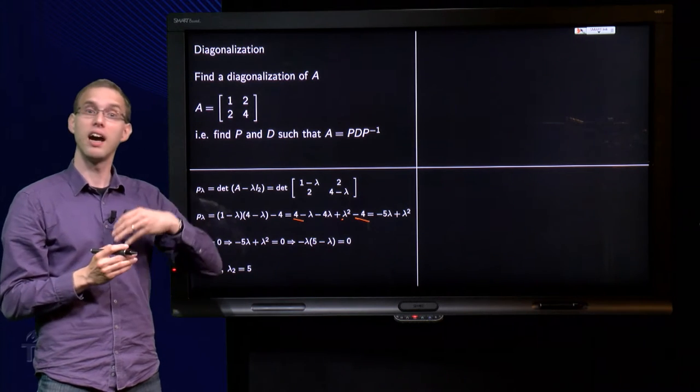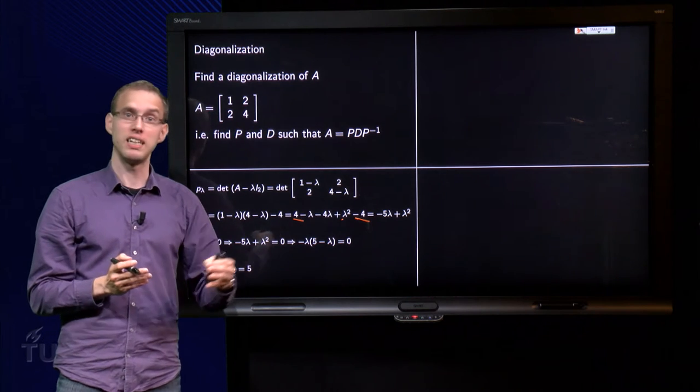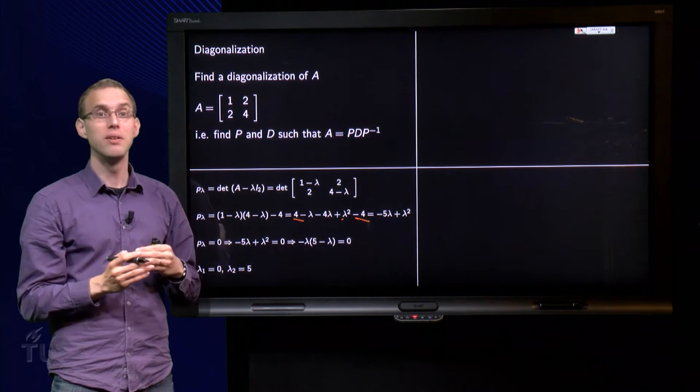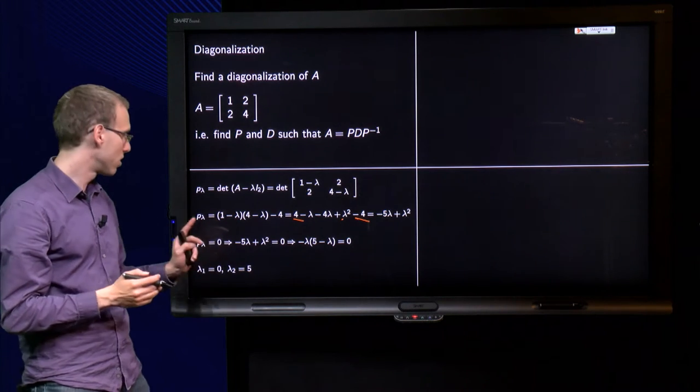That's step 1. Now we have an idea how the D matrix should look. But what about the P matrix? Well, for P we need the eigenvectors of A. So, how do we find eigenvectors?